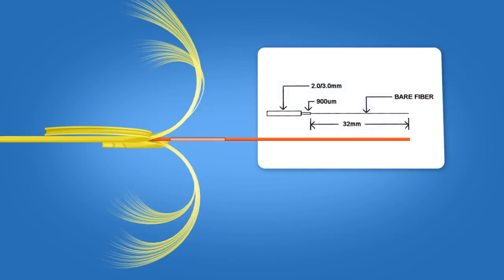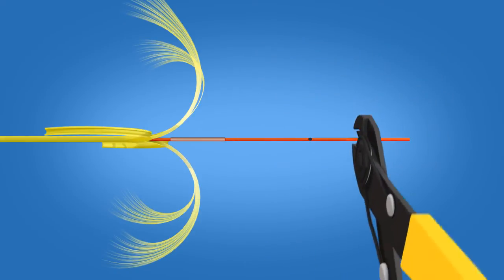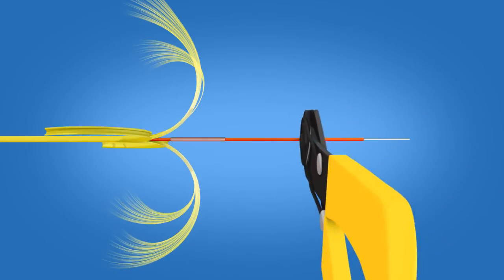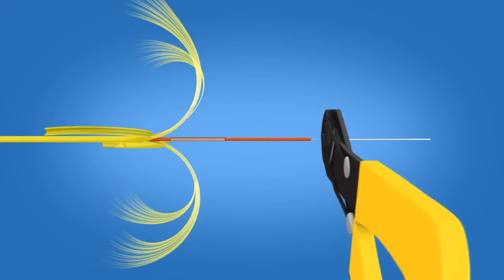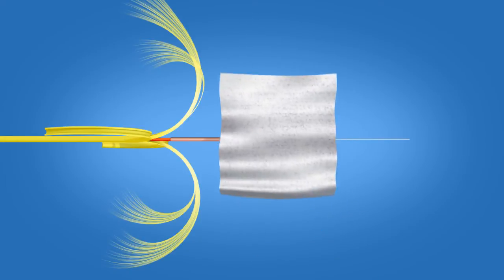Using the template on the front of the connector packaging, mark the fiber at 32 millimeters from the end of the 900 micron fiber. Strip 32 millimeters of 900 micron and 250 micron coating off, exposing the bare fiber. Clean the fiber with a lint-free wipe and fiber preparation fluid.